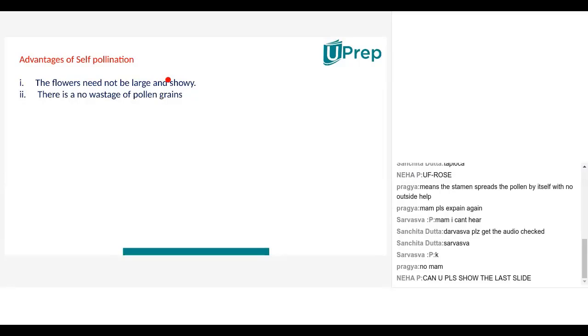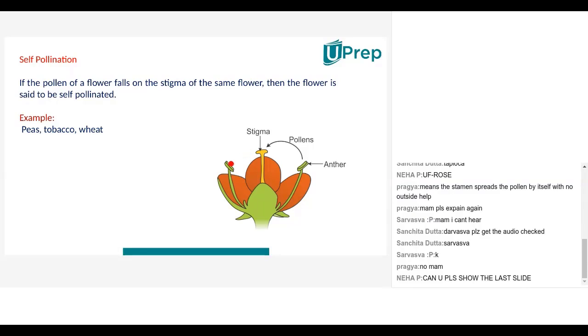What is the meaning? Because when the pollen gets shifted from the flower, the distance traveled is very less. From here to here only. The distance is very less. So not many pollen grains are wasted in case of self-pollination.